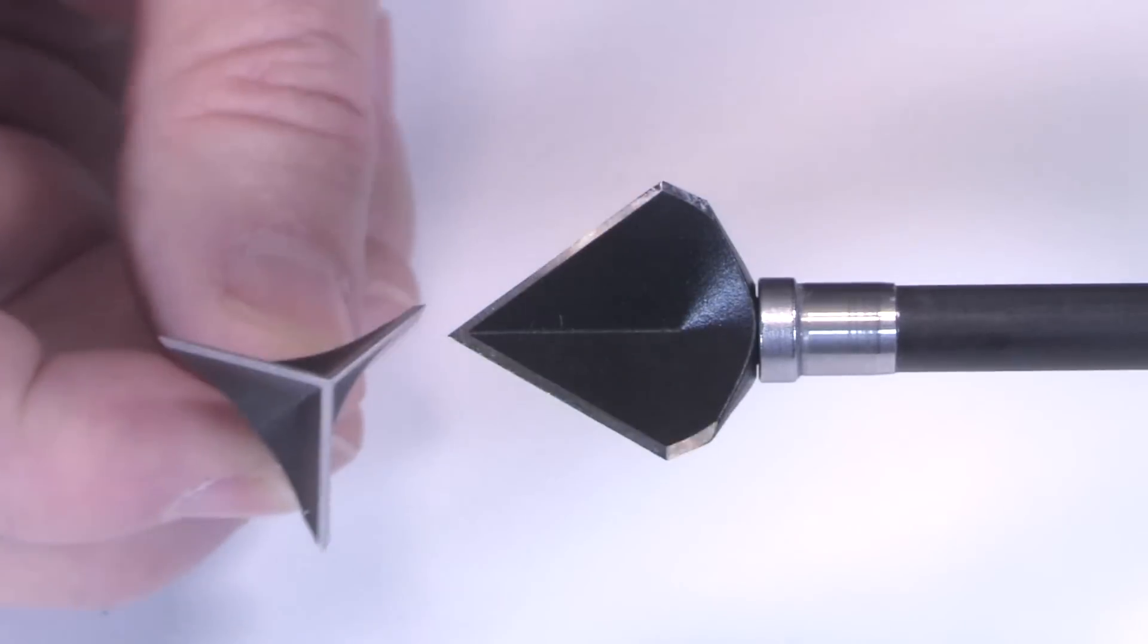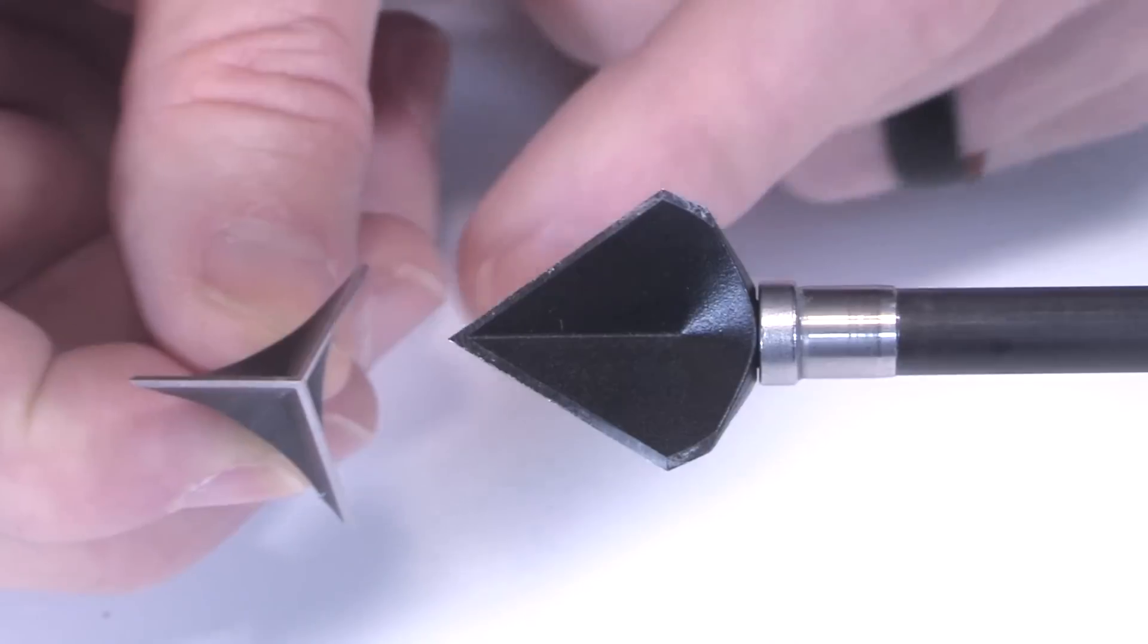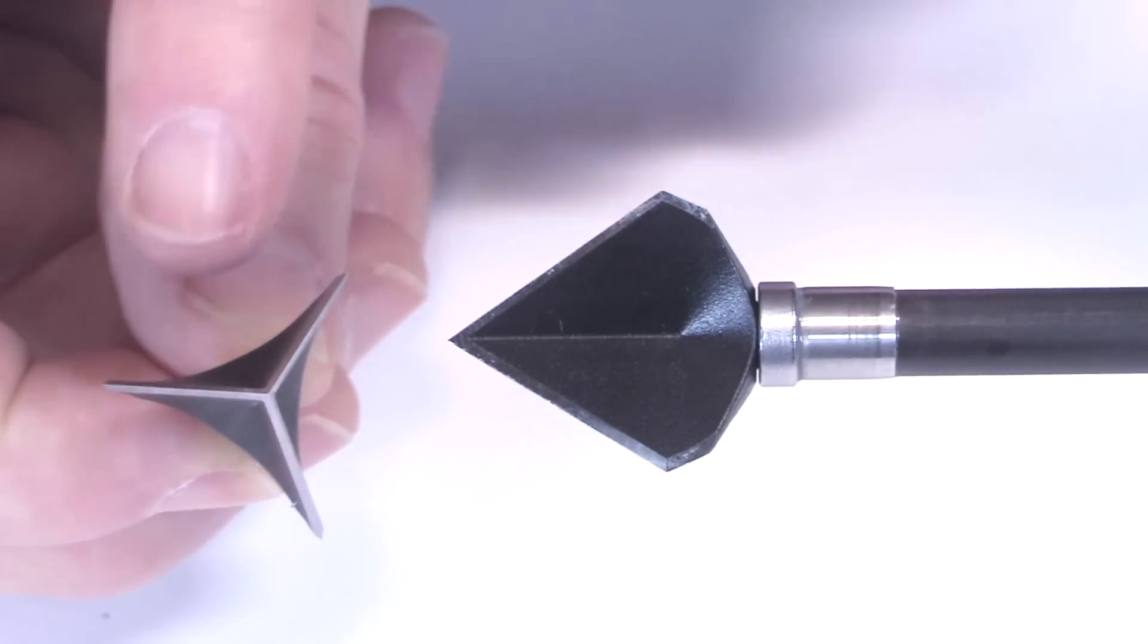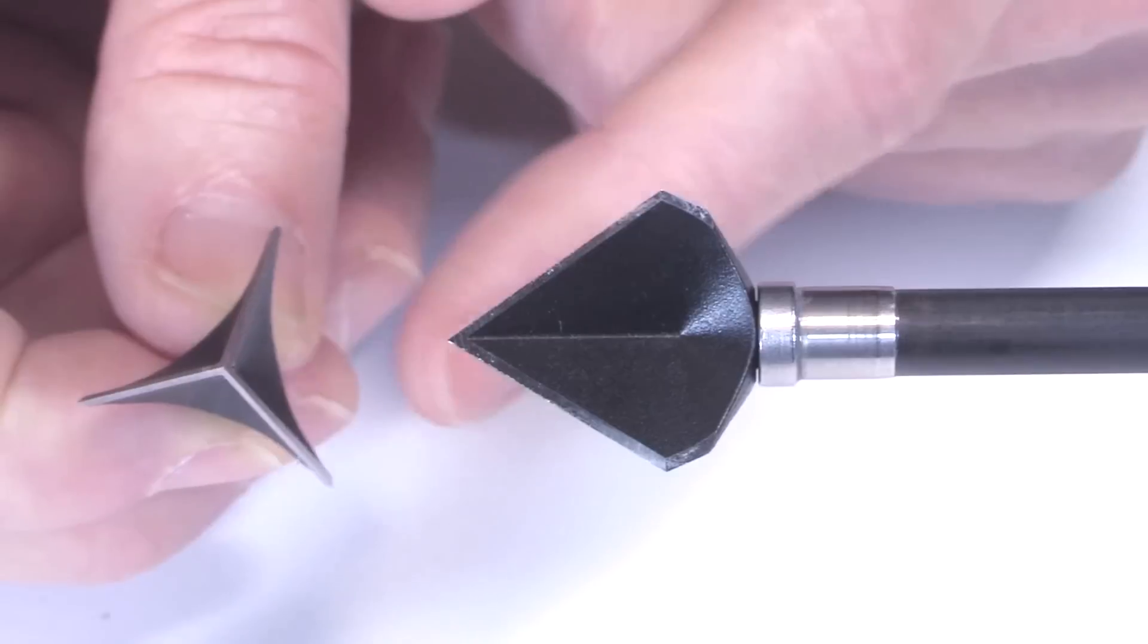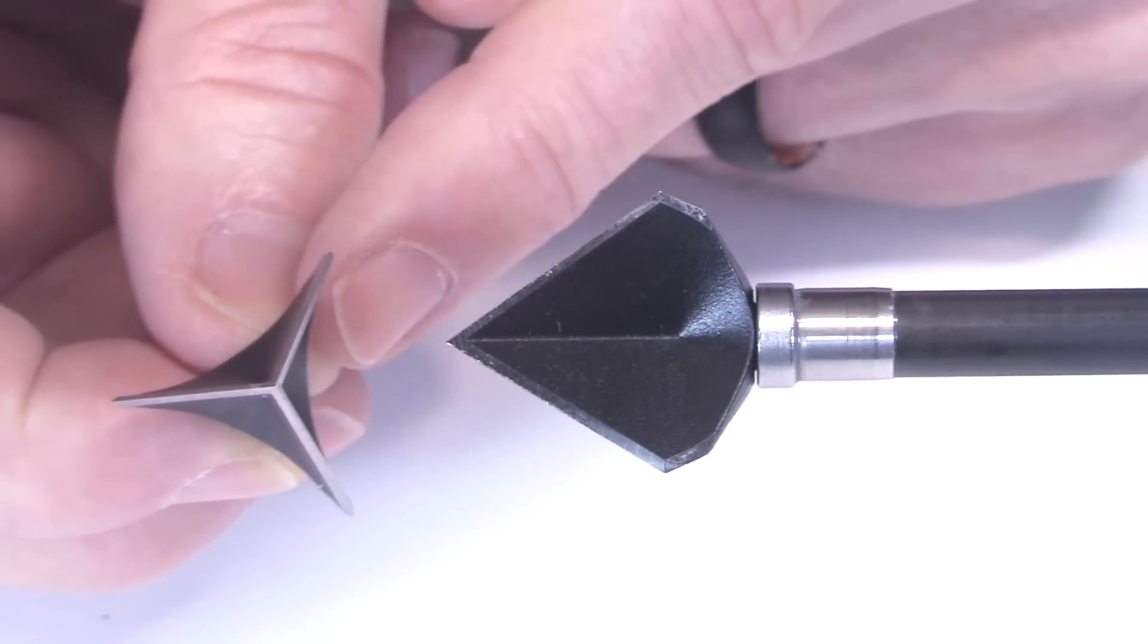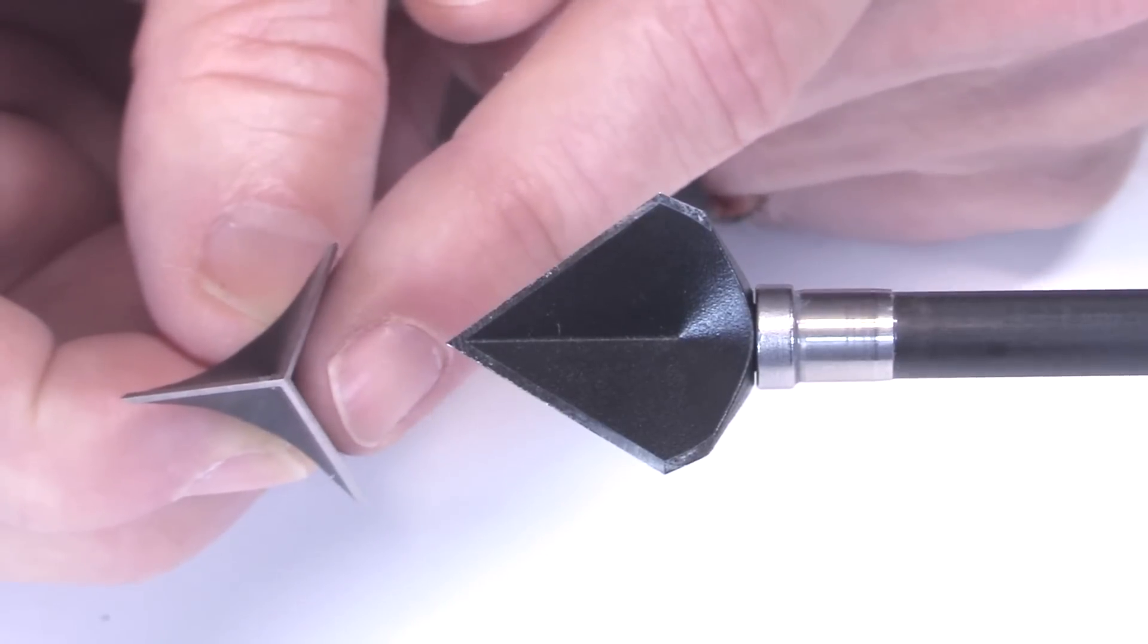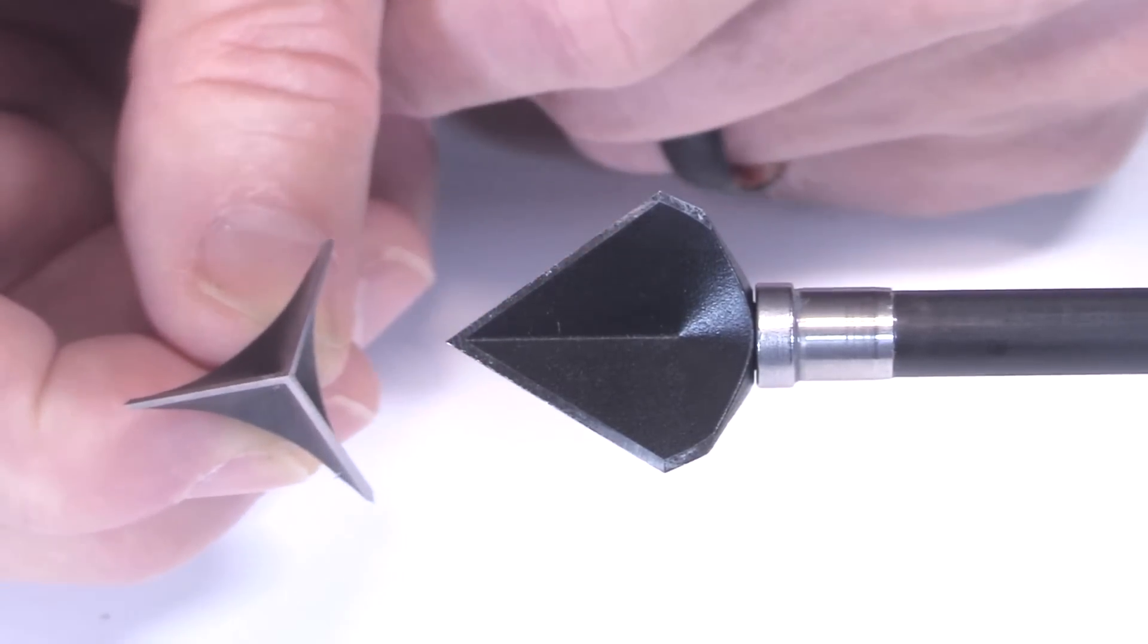However, it makes an even bigger hole than that because of this scoop design. So you see this surface area right here. Rather than just being three blades and then like a circle in the middle for the ferrule or for your arrow shaft, this is really going to make a triangular hole.